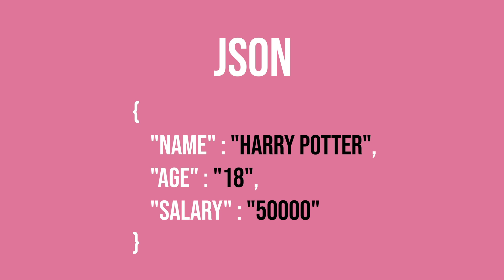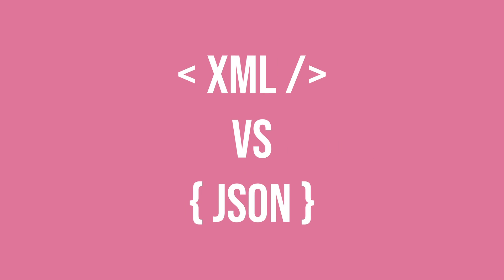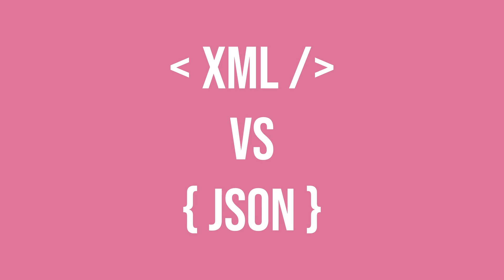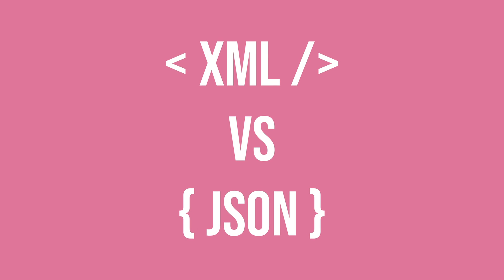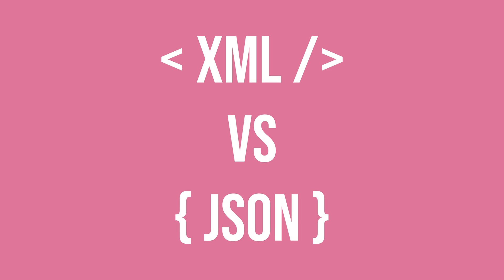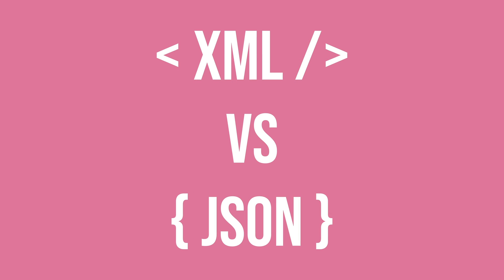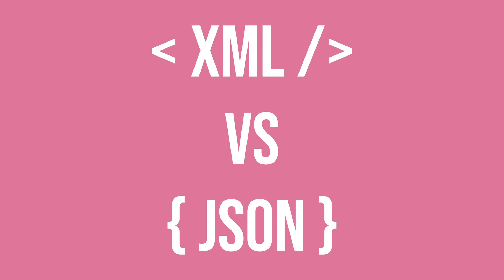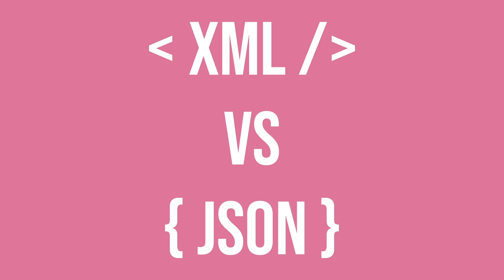We also have JSON, or JavaScript object notation, which has a different format but serves the same purpose — to transmit data from client to server. JSON is usually the preferred format because when making API calls you're often using JavaScript, which integrates well with JSON. It's easier to read and has a smaller size since there are no open and closing tags like in XML.